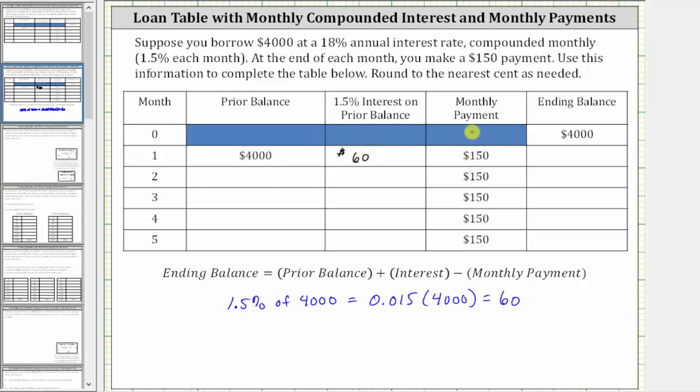And then you make the payment of $150. To determine the ending balance, we take the prior balance, add the interest, and then subtract the payment. 4,000 plus 60 minus 150 is 3,910, giving an ending balance at the end of month one of $3,910. Notice how the balance only decreased by $90, because of the 150, 60 paid off the interest, and only 90 decreased the balance.